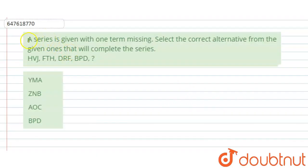Hello everyone, the given question is: a series is given with one term missing. See here we have a series given which is missing one term, and we have to find this term.